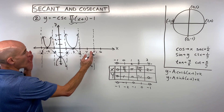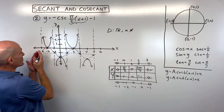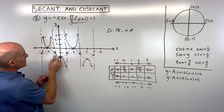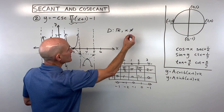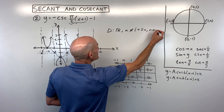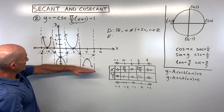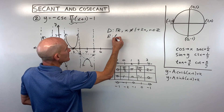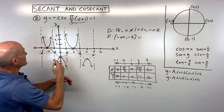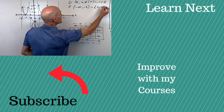Domain and range for this example: domain is all real numbers, but x cannot be where the asymptotes are — at 1, 3, 5 — so x ≠ 1 + 2n, where n is an integer. The range goes from negative infinity to −2 (including −2), then picks up at 0 to positive infinity — including 0.